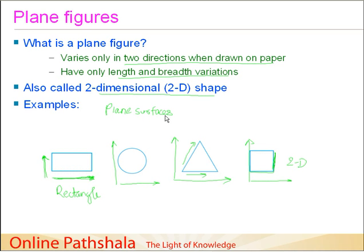I would also like to bring to your notice that these are very regular variations of plane figures. You could also have irregular plane figures, for example, a random figure like this. Now this figure is also varying in two dimensions. That is this one and this one, these two directions.